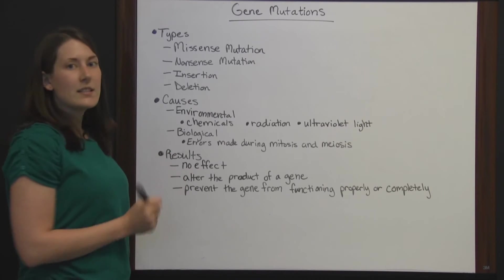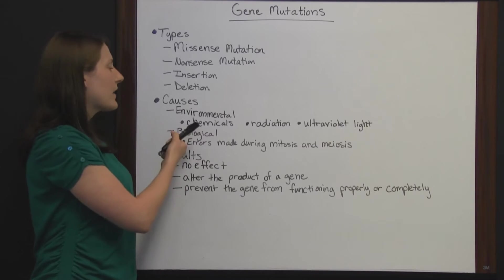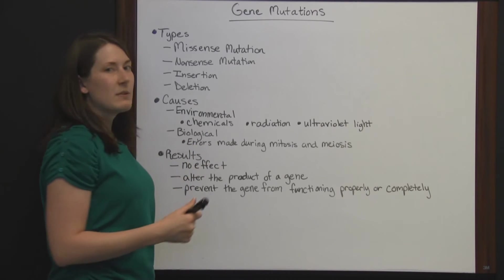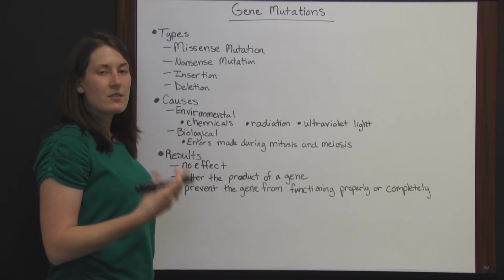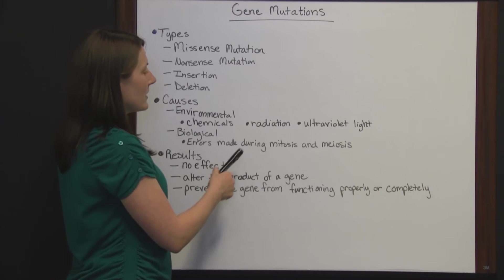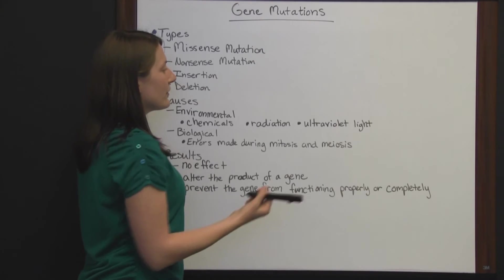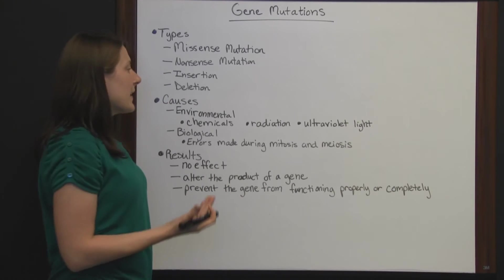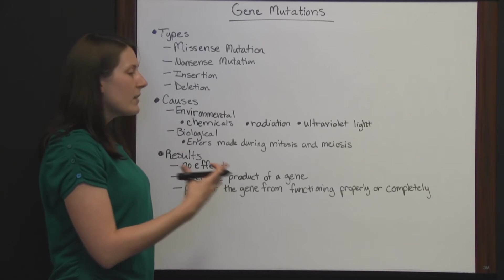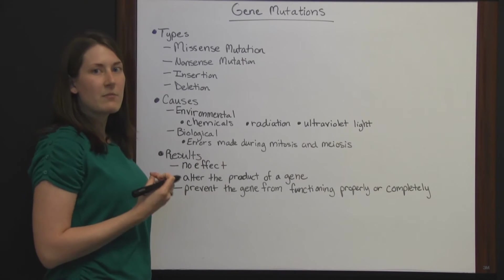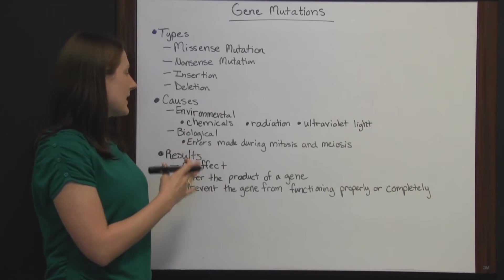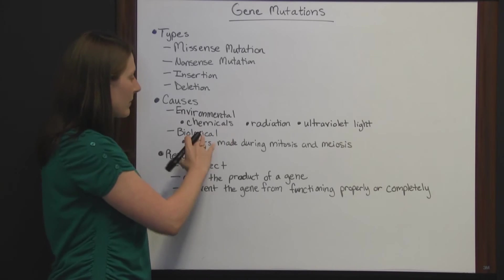Some causes for gene mutation are environmental causes, such as chemicals that you either ingest or that touch your body. Radiation and ultraviolet light, such as from the sun. If you have too much — or sometimes just any amount of some of these things, especially chemicals —